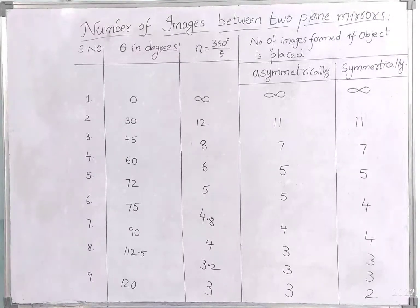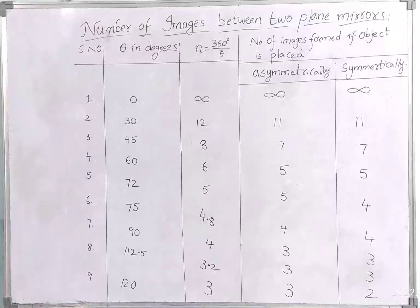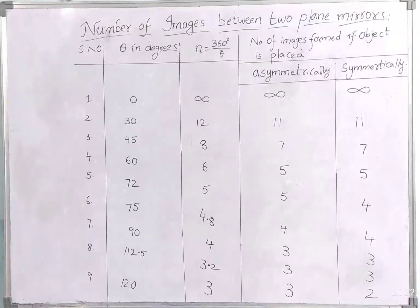Coming to the third situation, the angle between the two plane mirrors is 45 degrees. So n = 360/45, which gives 8. Since 8 is even, we do 360/theta minus 1, giving 7 images — both when the object is placed asymmetrically and when placed symmetrically.